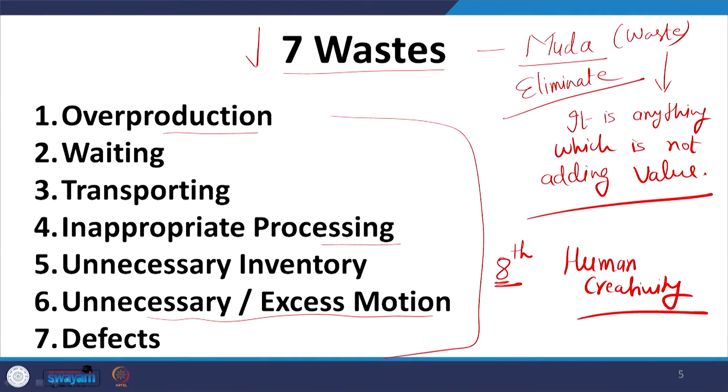It takes effort to identify these wastes and apply the tools and techniques to eliminate them. But it is very important to continuously identify and eliminate waste. If you continuously eliminate these wastes, that is automatically Kaizen — continuous improvement. Simply identify waste and focus on how to eliminate it, and improvement will take place.